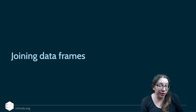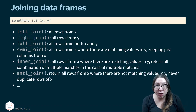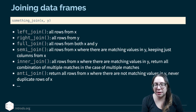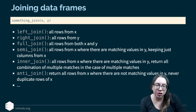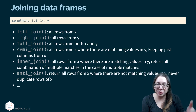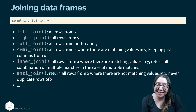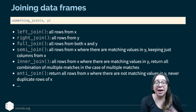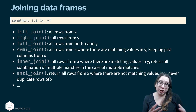To join data frames using dplyr functions, we use a set of functions always in the format 'something_join' — left join, right join, full join, semi join, and so on. These are not all of the join functions dplyr makes available, but they're the ones we'll focus on first because they're the most commonly used, especially when joining two flat data frames at a time.